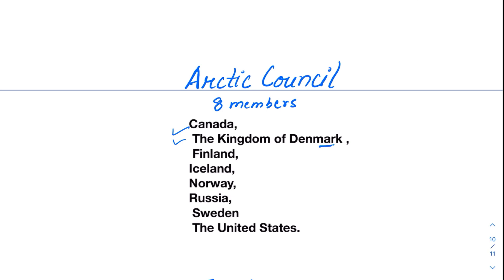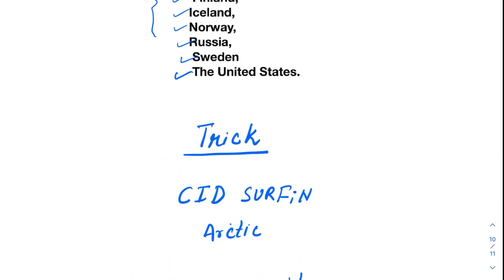To remember the names of these countries, since questions have been asked on this, there is a simple trick: CID SURFIN ARCTIC. In this mnemonic, C stands for Canada, I for Iceland, D for Denmark, S for Sweden, U for United States, R for Russia, FI for Finland, and N for Norway. ARCTIC stands for Arctic Council, so this trick is specifically for Arctic Council members.